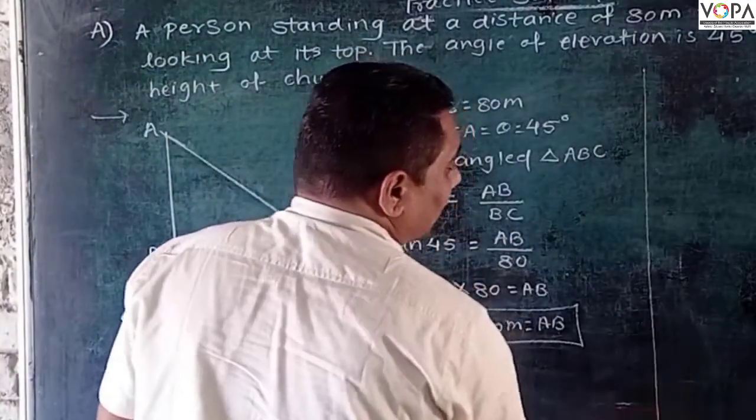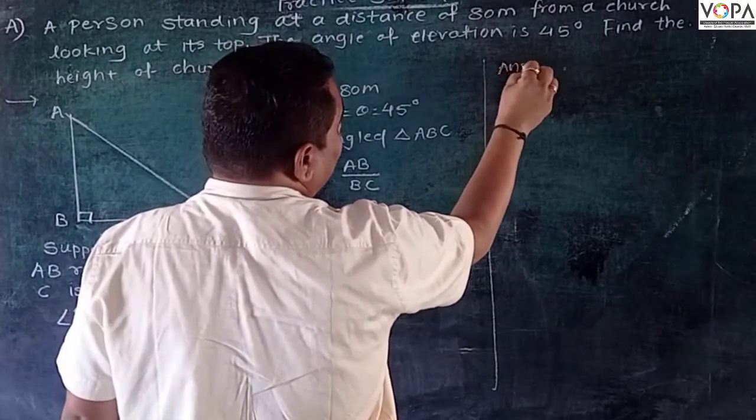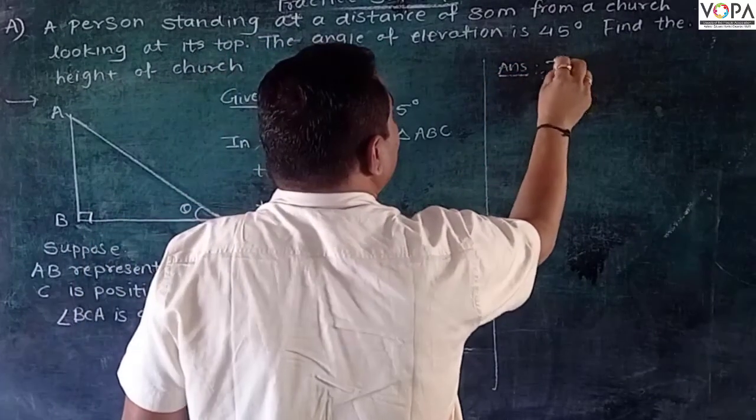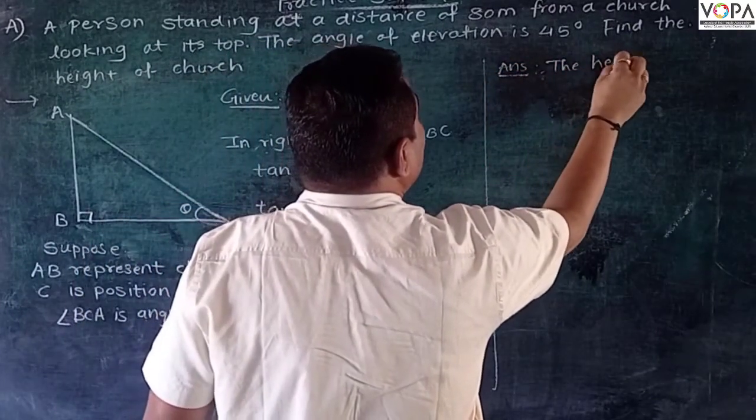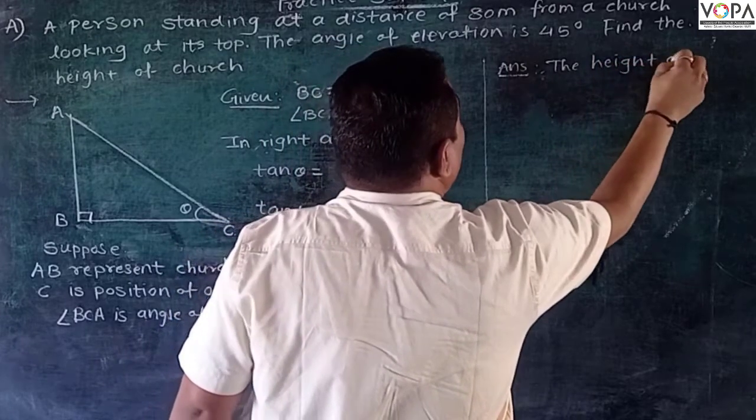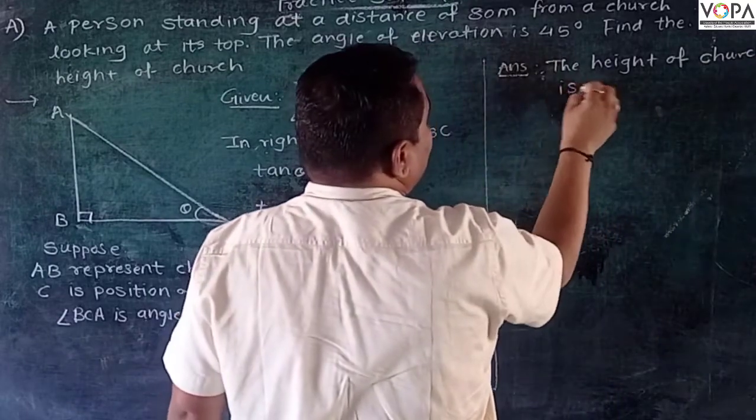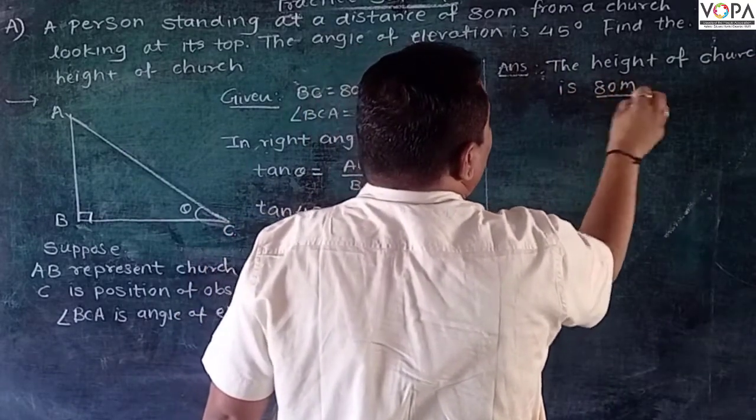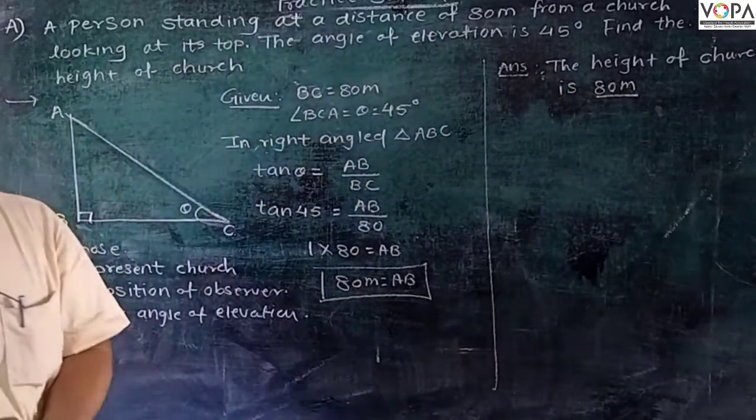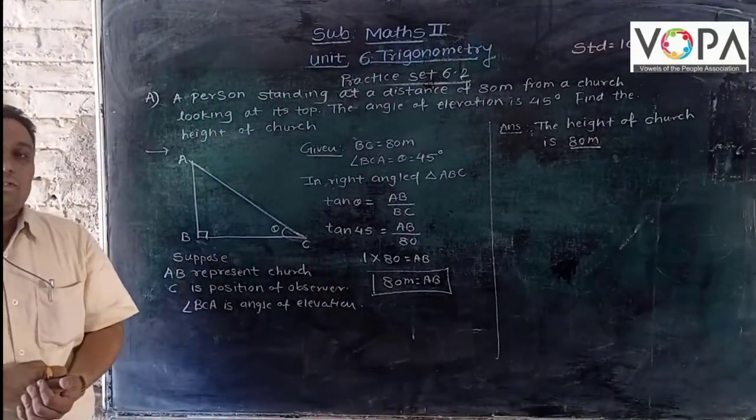So you can write the answer in full: the height of the church is 80 meters. In this way you can solve this problem.